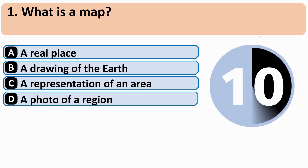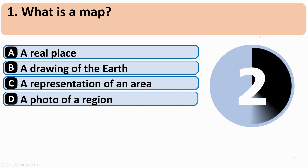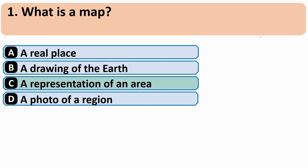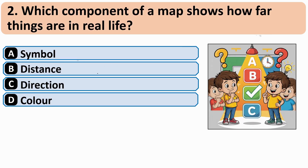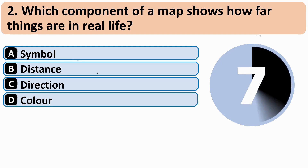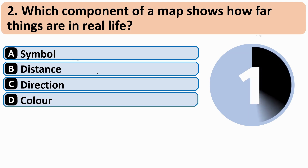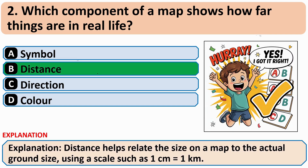What is a map? The correct answer is C — a representation of an area. Which component of a map shows how far things are in real life? The correct answer is B — distance.